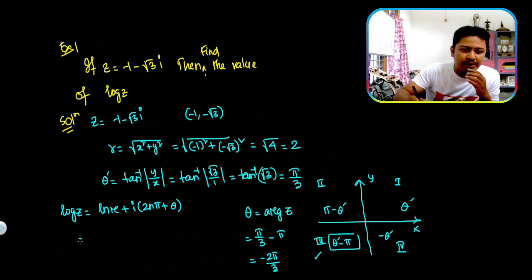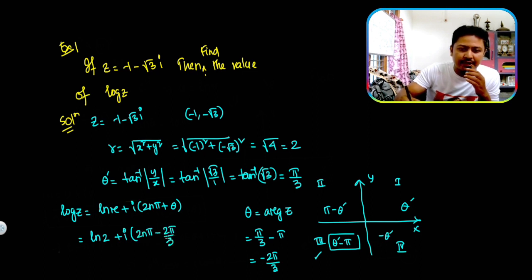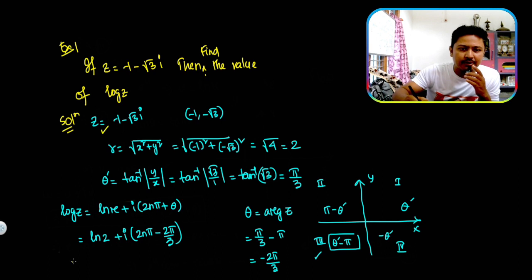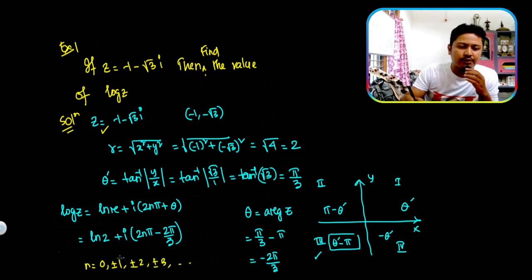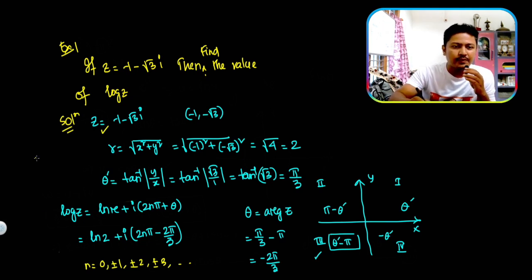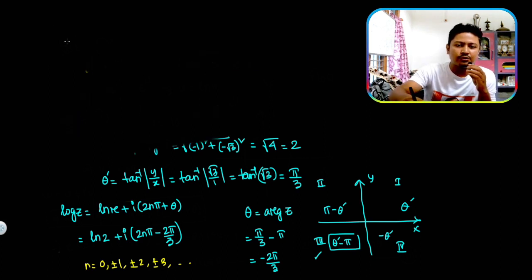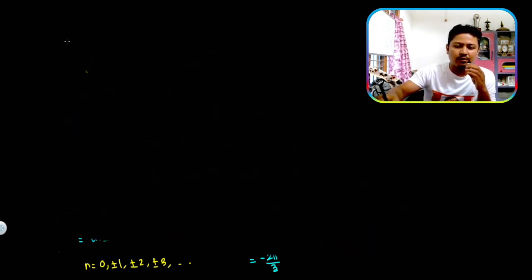So log z equals ln 2 plus iota times (2nπ plus (−2π/3)), where R equals 2. For n equals 0, plus or minus 1, plus or minus 2, and so on, you get different values of log z.